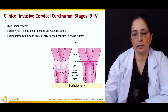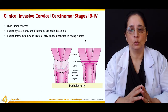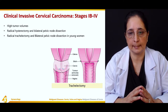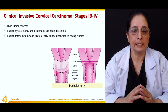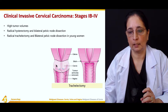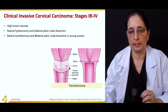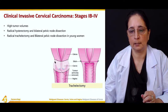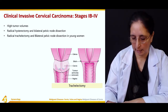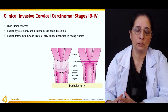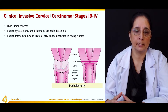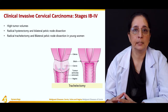Radical hysterectomy is done to remove the uterus, and bilateral pelvic node dissection is performed. Radical trachelectomy is the removal of the cervix — this is the part that is removed. Radical trachelectomy and bilateral pelvic node dissection are performed in young women who want to retain fertility; it is better to perform trachelectomy instead of hysterectomy.